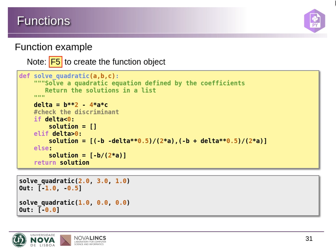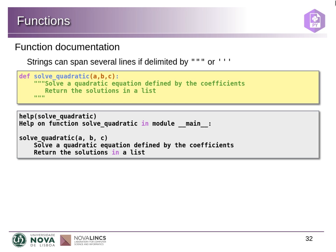There are two ways of referring to the function. If you just use the name of the function, you are telling the interpreter it's this object — the function object itself. This is what you do for example when you want help on the function: you pass the function object to the help function, which then gets the documentation.